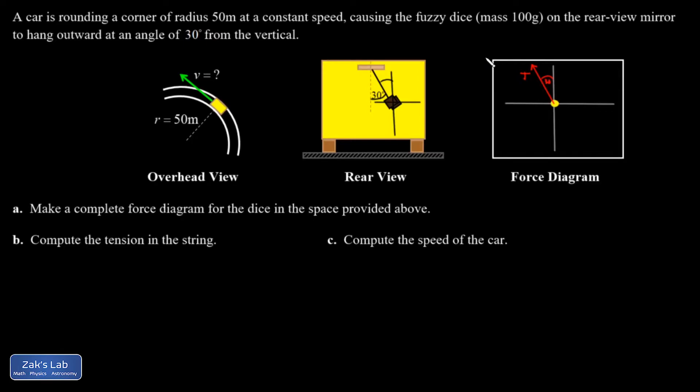And then, of course, gravity is pulling straight down with a force of mg. And then I have my little mass m, which I know is 100 grams. But I'll just leave it symbolic in the diagram.